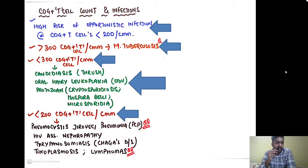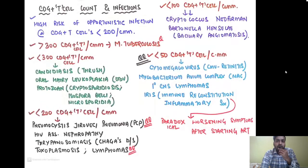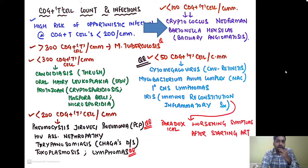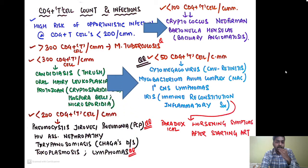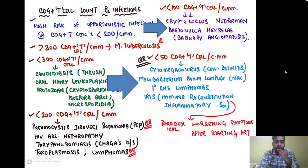When the CD4+ count falls below 200, there is increased risk of PCP — Pneumocystis jirovecii pneumonia — HIV-associated nephropathy, trypanosomiasis (Chagas disease), lymphomas, and toxoplasmosis. When the count is less than 100, there is high chance of cryptococcal neoformans infection and Bartonella henselae infection causing bacillary angiomatosis. When the count is less than 50 per cubic millimeter, there is high chance of CMV retinitis and Mycobacterium avium complex infection — the atypical mycobacterial infection. There is also increased risk of primary CNS lymphoma and IRIS — immune reconstitution inflammatory syndrome — characterized by paradoxical worsening of symptoms after starting ART therapy.